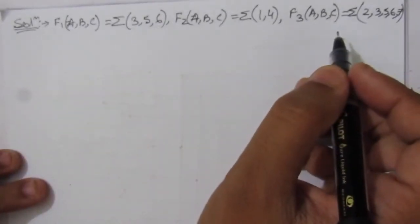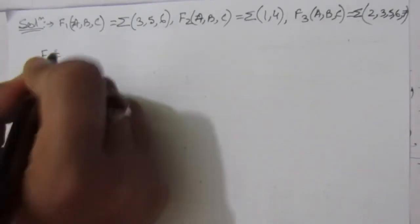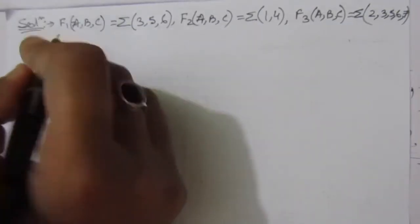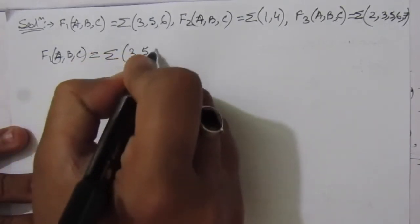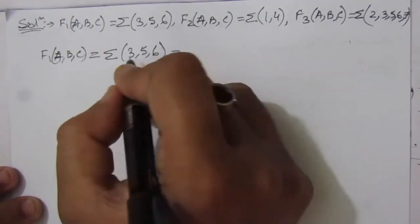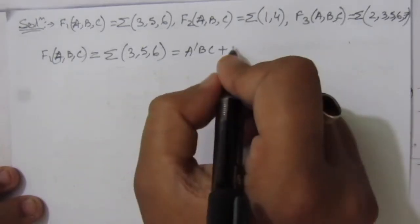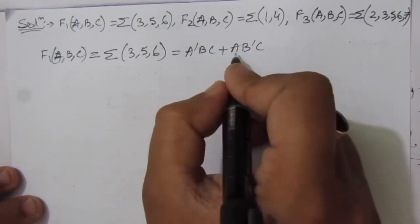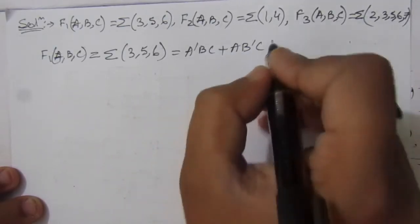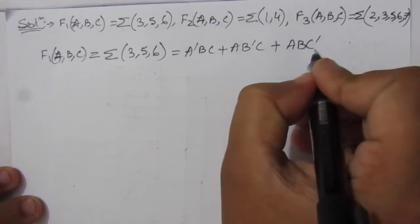Before drawing the decoder, we need to express the given Boolean functions in terms of NAND expressions. F1(A, B, C) = Σ(3, 5, 6). This is: minterm 3 = A̅BC (011), minterm 5 = AB̅C (101), and minterm 6 = ABC̅ (110).